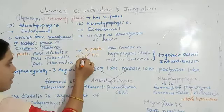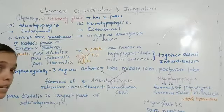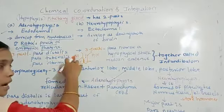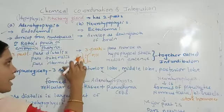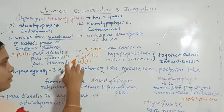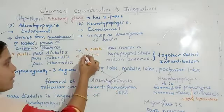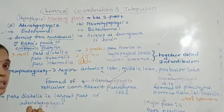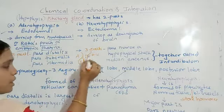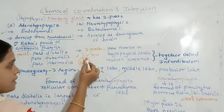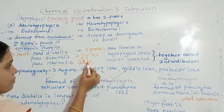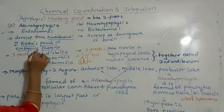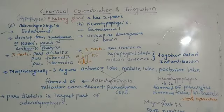The larger lobe is the anterior part and the smaller lobe is the posterior part, called the anterior lobe and posterior lobe respectively. The anterior lobe corresponds to the adenohypophysis and the posterior lobe to the neurohypophysis. Histologically, the anterior lobe has three parts: pars tuberalis, pars distalis, and pars intermedia. The posterior lobe or neurohypophysis includes the median eminence, infundibulum hypophysis stalk, and pars nervosa. The pars distalis is the largest part of the adenohypophysis.